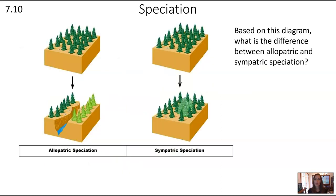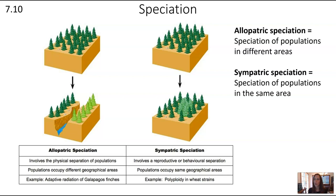Let's talk about speciation in terms of geography. Allopatric speciation is where speciation happens with populations in different areas, separated by a geographical barrier like a river, canyon, or ocean. Sympatric speciation is where speciation happens in the same place — the populations are not physically separated from each other.